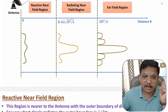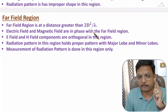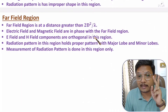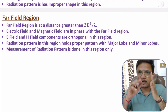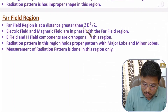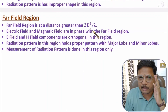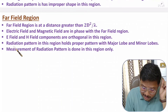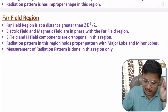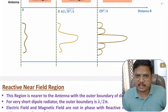The third region is the far field region, where distance is greater than 2d²/λ. In the far field region, electric field and magnetic field are both in phase with each other and orthogonal to each other. Proper EM waves travel in space only during the far field region. The boundary limit is 2d²/λ — beyond that distance we have the far field. All radiation pattern measurements are done in the far field region only, where you can observe the proper radiation pattern with a clear major lobe and minor lobes.